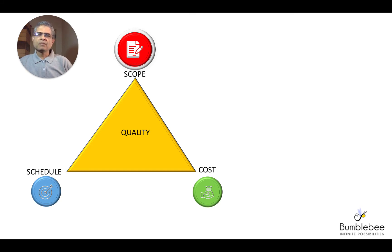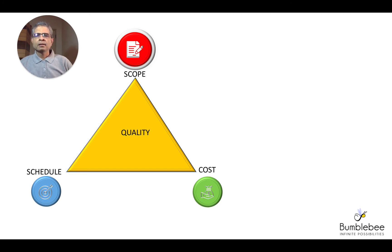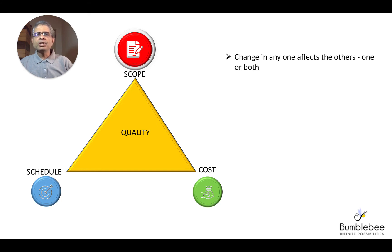This is a very important tool in the hands of the project manager, and he needs to keep in mind that the three constraining aspects of this triangle are critical to be managed while executing the project well. A change in any one of them affects the others — it may affect either one or both of them.